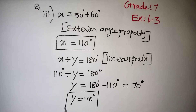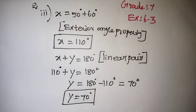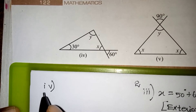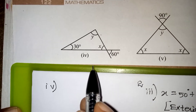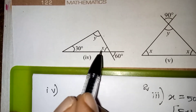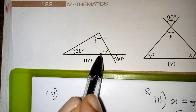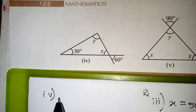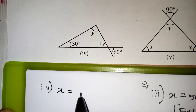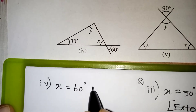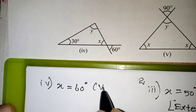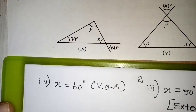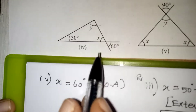So we got x value as well as y value — that is all for this problem. We will move on to the fourth problem now. By looking at the diagram, x and 60 degree are equal because they are vertically opposite angles. So x is equal to 60 degree, reason: VOA — vertically opposite angles.